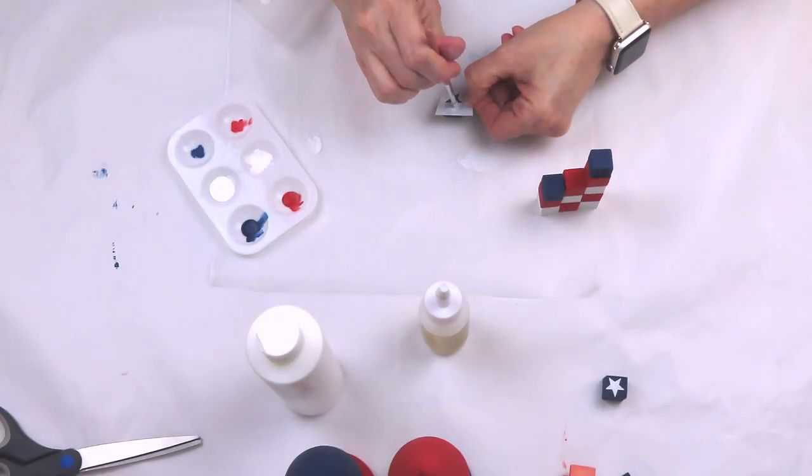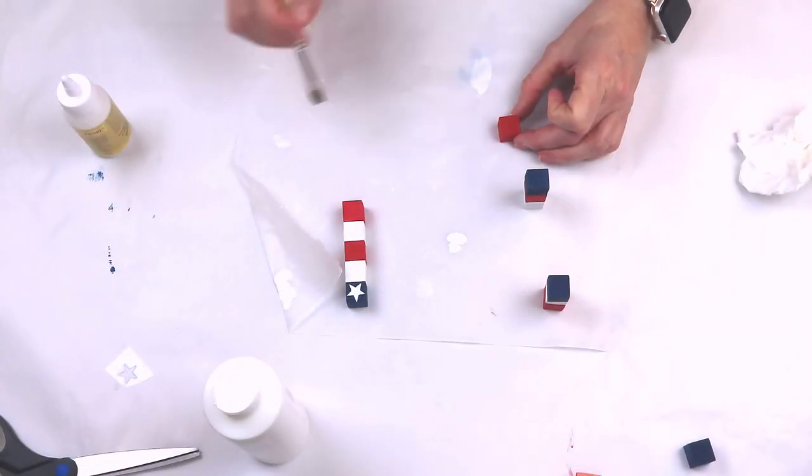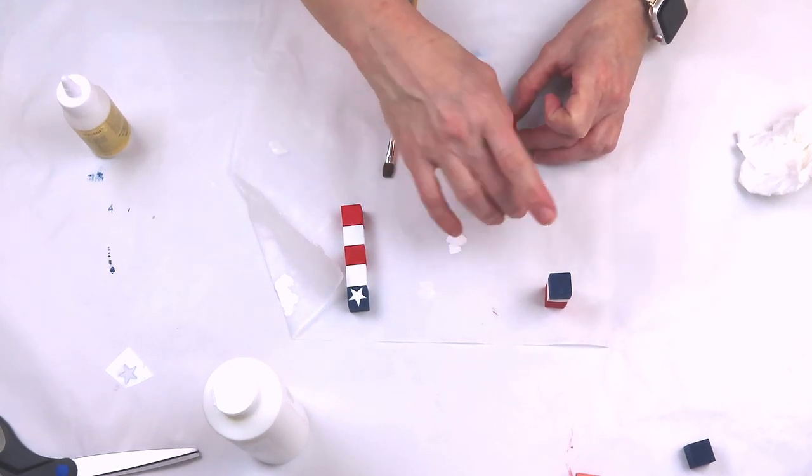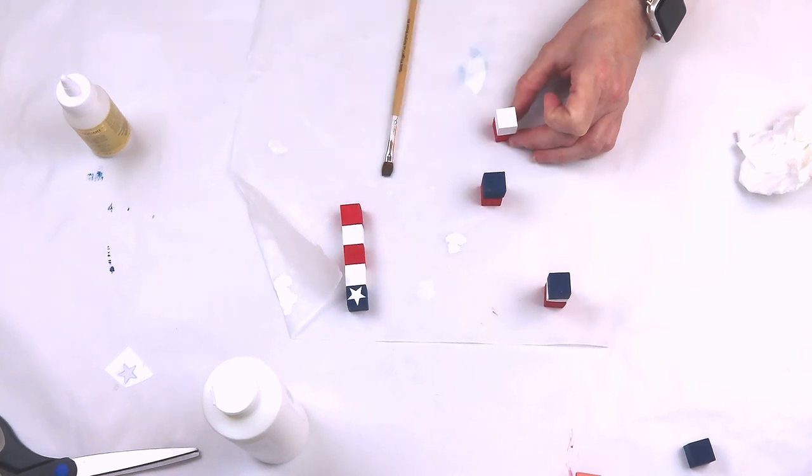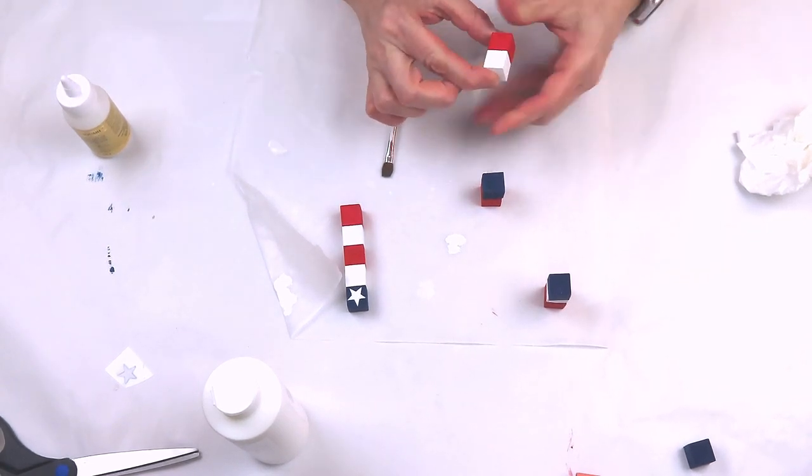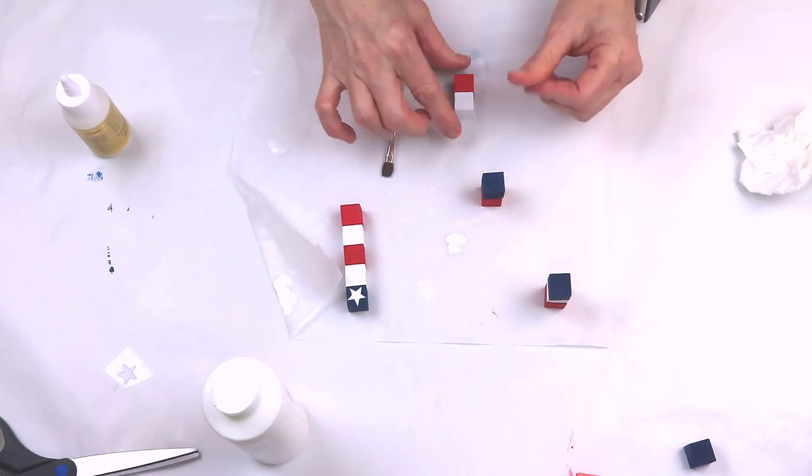And then after they dry, I'm just taking a stencil, and I'm going to stencil a white star on each of the blue cubes. And then again, after they dry, I'm just going to take some of the wood glue that came from the Dollar Tree, and I'm just going to use my little brush and brush it on there, and it sets up very quickly. And then just stack them on there in the red, white, and blue pattern.